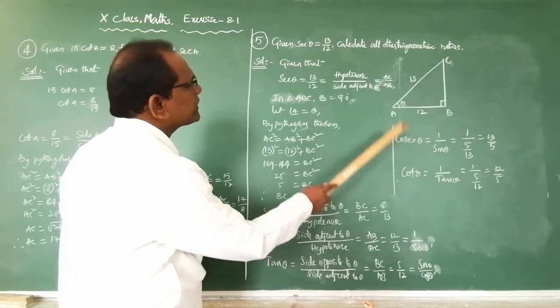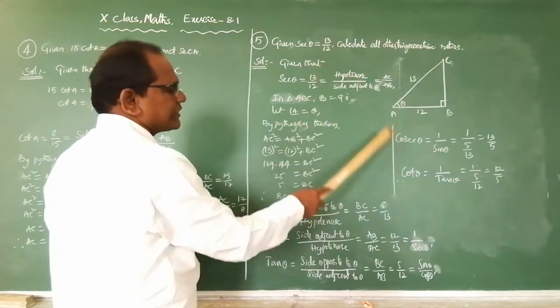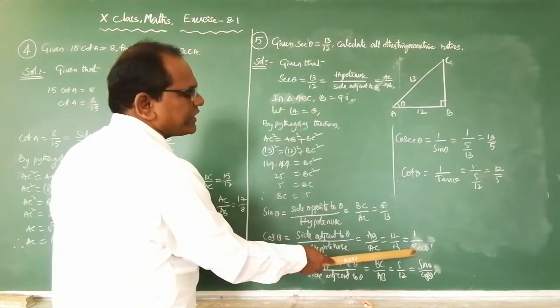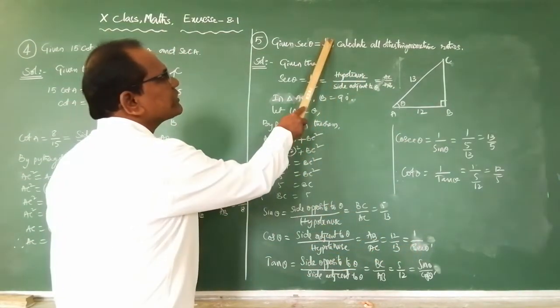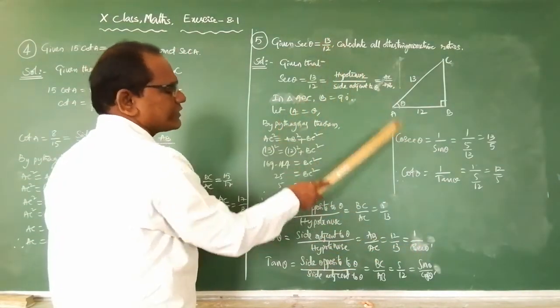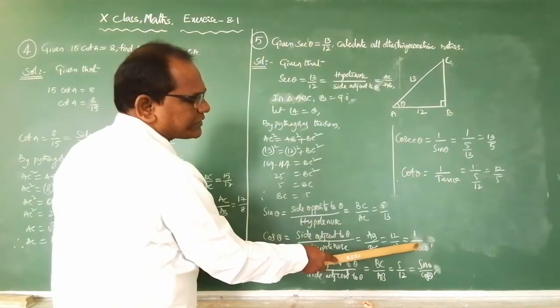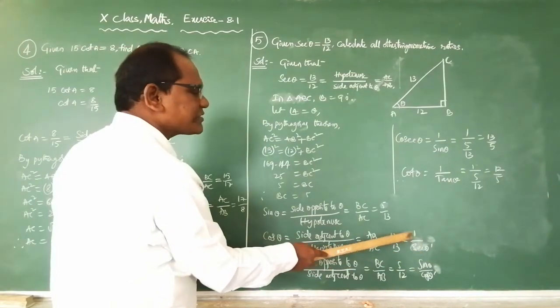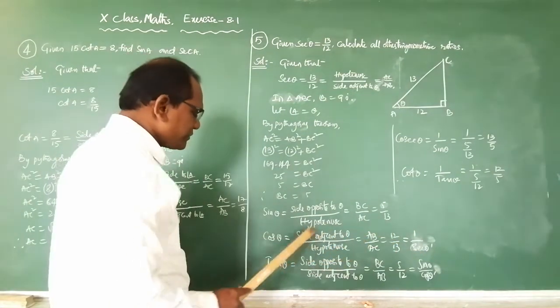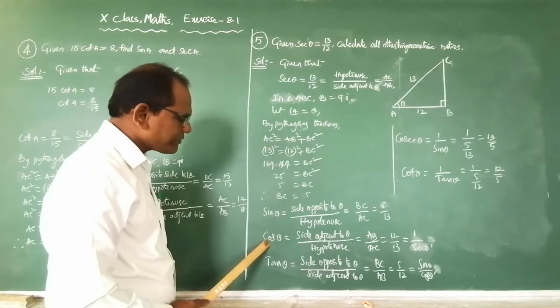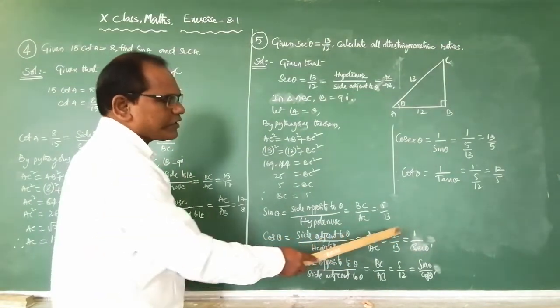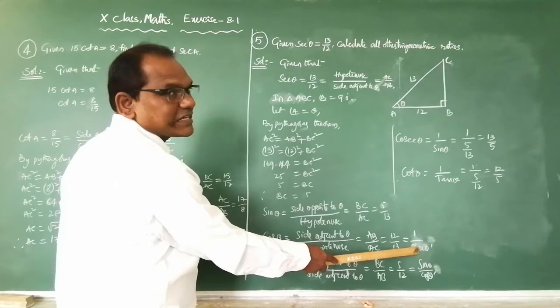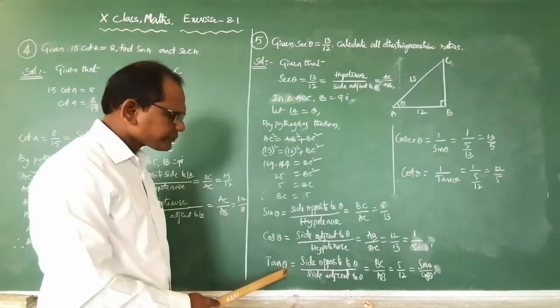Cos θ equals 1 by sec θ. Sec θ value is 13 by 12, so 1 divided by 13 by 12 equals 12 by 13. Therefore cos θ equals 12 by 13.